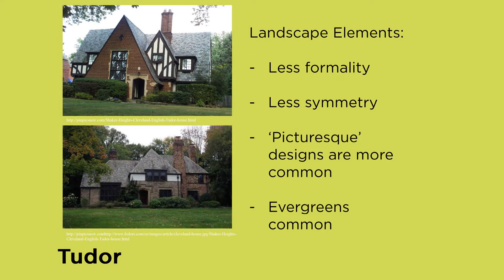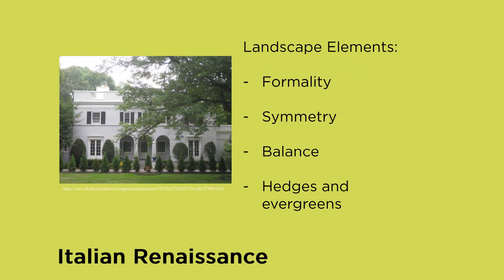The Tudor style is much less formal. Landscape elements here show less formality, less symmetry, and a greater sense of the picturesque — trees and shrubs of varying sizes used to frame the building. Evergreens are very common within this style. We do also see some Italian Renaissance, another formal style. We see formality, symmetry, and balance — another style that lends itself to a central axis and mirrored gardens. Hedges and evergreens are common to frame and highlight the building and create edges.